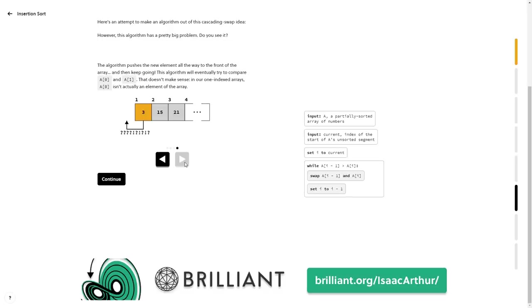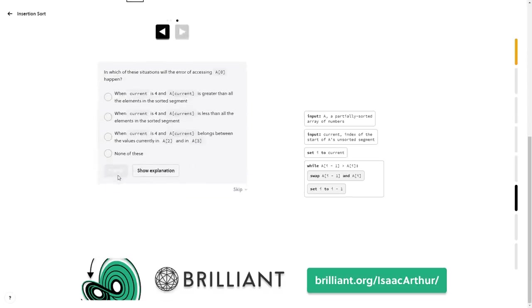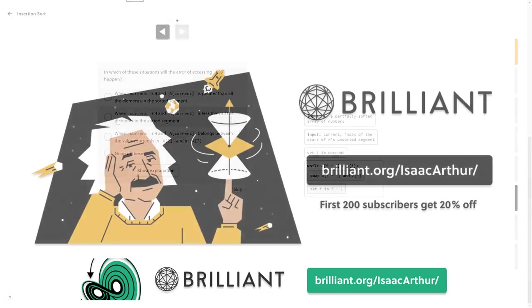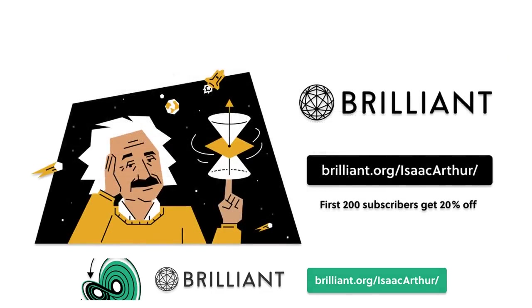Knowing and understanding math, science, and computer science unlocks whole new worlds, and if you'd like to start your journey to them, you can try out Brilliant for free and get 20% off a year of STEM learning. Click the link in the description down below, or visit brilliant.org slash Isaac Arthur.